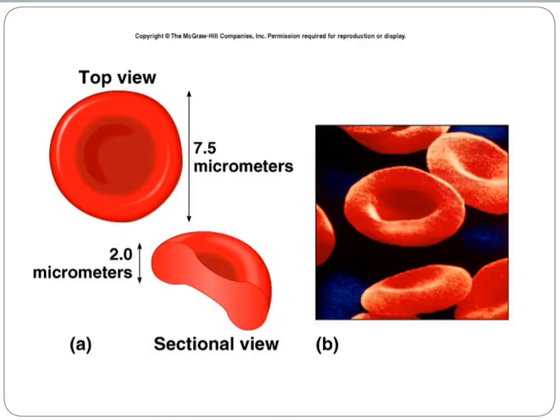Here's what those red blood cells — erythrocytes — look like. You can see how they're dimpled or pinched in the middle. That helps give them flexibility, but it also creates a larger surface area. We want these red blood cells to carry as much oxygen as they can, so a larger surface area means they can have more hemoglobin pigment and carry more oxygen.